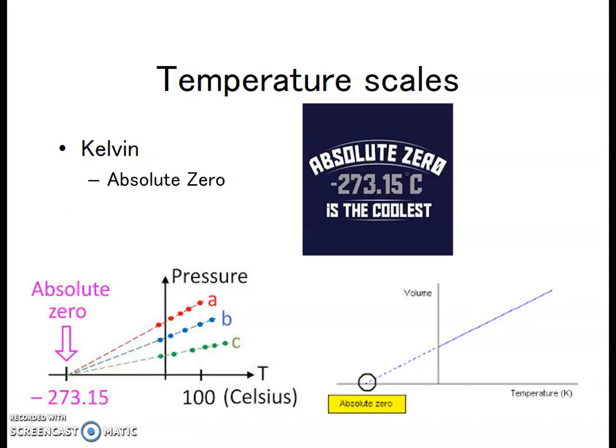The absolute zero, the lower limit of temperature, is negative 273.15 degrees Celsius, or 0 Kelvin. Absolute zero is the point at which the object has no volume. If you look over there on the bottom right at that graph, absolute zero, 0 Kelvin, you can also see that the volume of the object is 0. The pressure of the object at absolute zero is equal to 0. So inside the object, there's actually no motion taking place at absolute zero.